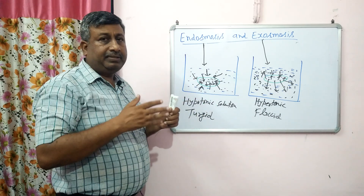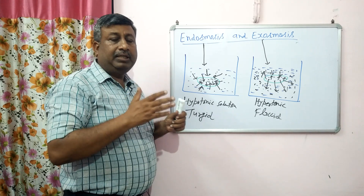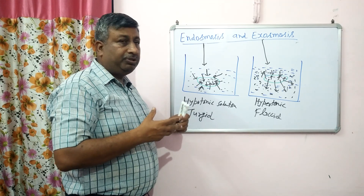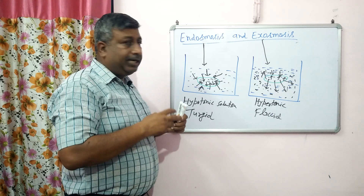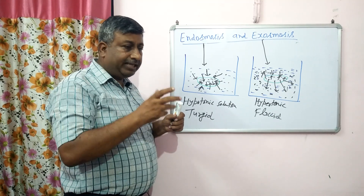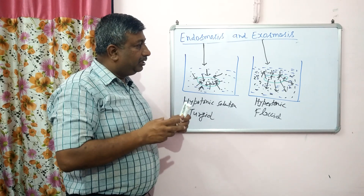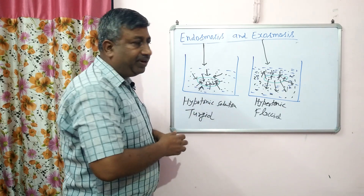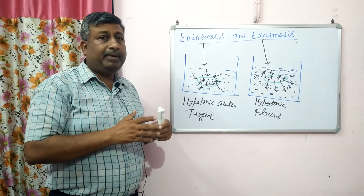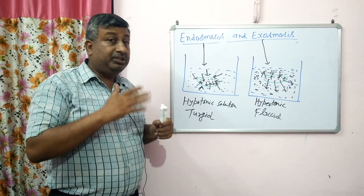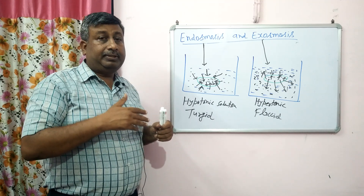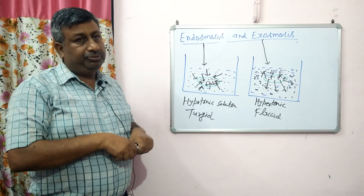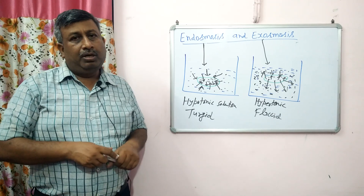So this is the process of endosmosis and exosmosis in cells, which decides the water content in the cell. Cells become turgid with more water content because of endosmosis, which occurs when surrounding solution is hypotonic. When surrounding solution is hypertonic with more solute concentration, water moves outside, cell shrinks, and becomes flaccid. These processes are affected by the surrounding solution concentration relative to cell concentration. Thank you.